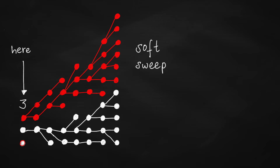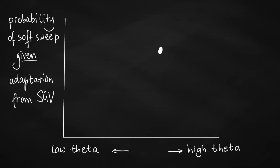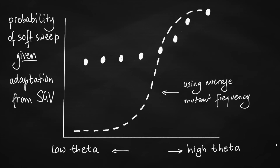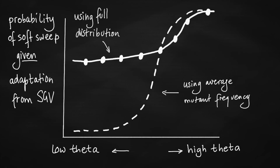We ran many simulations to determine how likely it is that adaptation from standing genetic variation occurs through a soft sweep. We used different values of theta, where theta is a product of the mutation rate and the population size. This dot shows the probability of a soft sweep given that adaptation from standing genetic variation has happened. The probability is high when theta is high, but it doesn't get very low even if theta is very low. We also predicted the probability using a mathematical model. If we use the average number of mutants to predict the probability of a soft sweep, we clearly underestimate it. But if we use the full distribution of the number of mutants in the population — taking into account that sometimes there are no mutations and sometimes there are many — we can predict the probability of a soft sweep quite accurately.